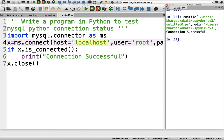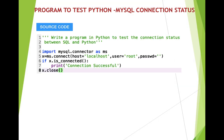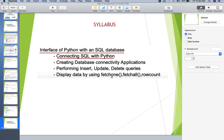To summarize: we wrote a program to test the connection status. We opened Python, imported the necessary packages, established the connection, tested it for successful connection, and cleaned the session using the close function — resulting in the output 'Connection Successful'. This is our first program where we tested the connection. Out of the syllabus, we have completed the connection part, which is the first topic. Thank you — I'll see you in the next session.